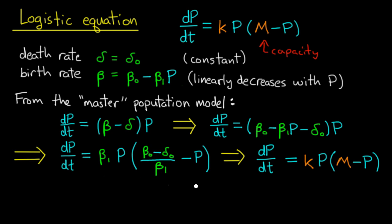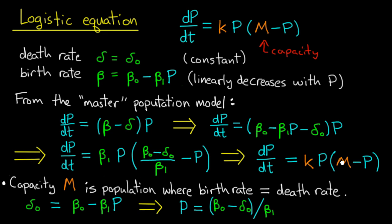Now I'd like to discuss in this context why it's reasonable to think of M as sort of a maximum population or a maximum capacity. And the way to think about this is to interpret M as the population level where the birth rate equals the death rate.